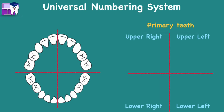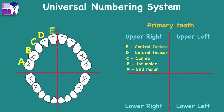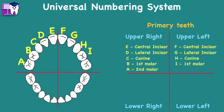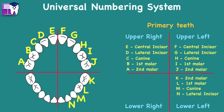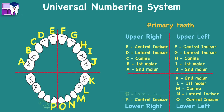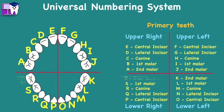In deciduous or primary teeth, a similar pattern is used replacing numbers with letters. It starts with: A second molar, B first molar, C canine, D lateral incisor, E central incisor, F central incisor, G lateral incisor, H canine, I first molar, J second molar, K second molar, L first molar, M canine, N lateral incisor, O central incisor, P central incisor, Q lateral incisor, R canine, S first molar, and T second molar.